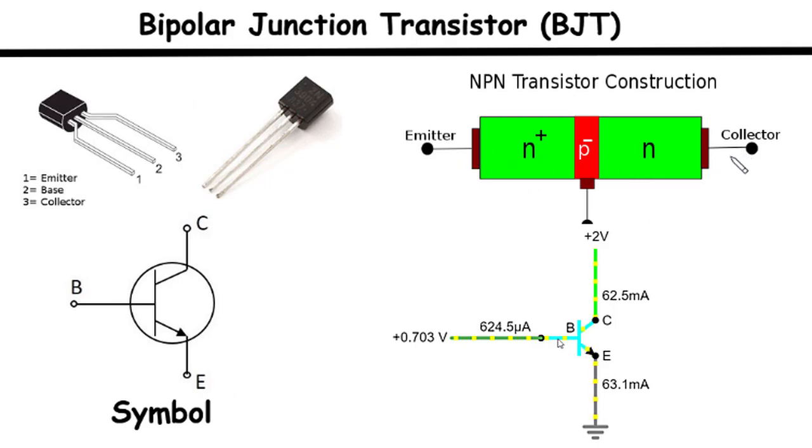The emitter is heavily doped with impurities to enhance its conductivity. The base, situated between the emitter and the collector, is lightly doped. The collector, like the emitter, is also moderately doped. These three layers form two P-N junctions: the base emitter junction and the base collector junction.